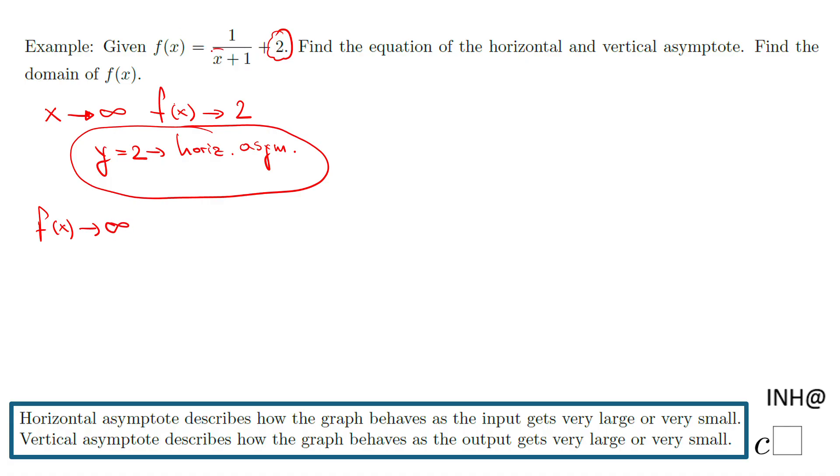In this case you want to take a look at this guy here, x plus one, make it equal to zero, solve it. In this case it's very easy—subtract one. That's it, this is the vertical asymptote x equals negative one.